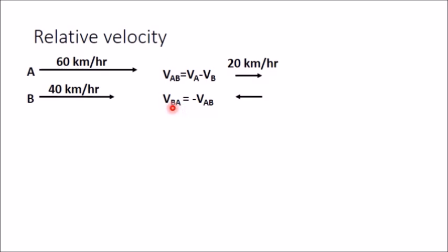If you want the velocity of B with respect to A, which is just opposite, the magnitude will be the same but the direction will be just opposite. So VBA is also 20 km per hour, but in the direction opposite to VAB.